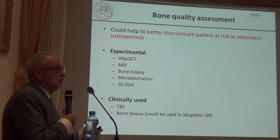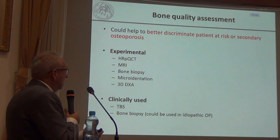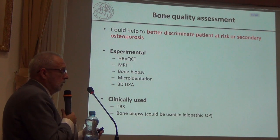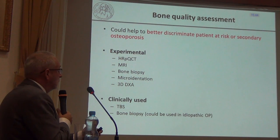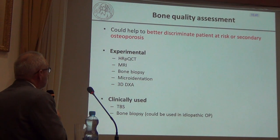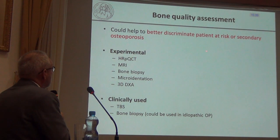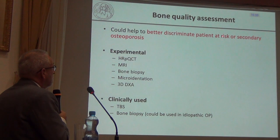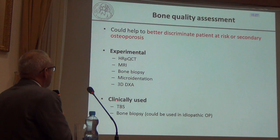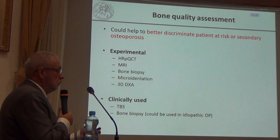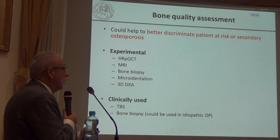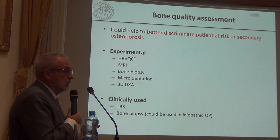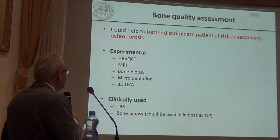Bone quality assessment is important, especially to discriminate patients at risk of secondary osteoporosis. There are experimental and clinical possibilities. Trabecular Bone Score (TBS) is the easiest clinical tool to check bone quality in secondary osteoporosis, and the speaker will present their own data on this.